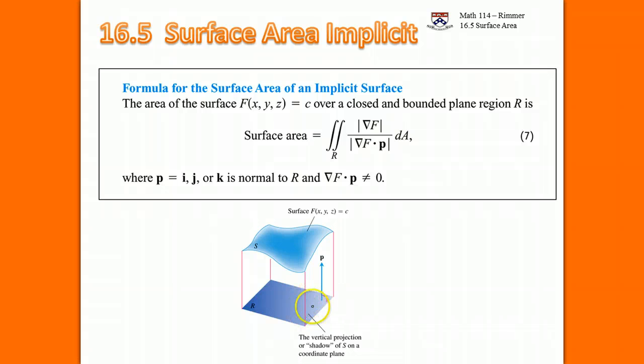If it's going to be the x, y plane, then you use P equals K. That would be normal to the x, y plane, but if you use the other ones, you would use I or J. So normal to R. So you get this function F, you take the gradient of it, and you take its magnitude. So the numerator is the magnitude of the gradient. Denominator, you do a dot product between the gradient and your vector P.